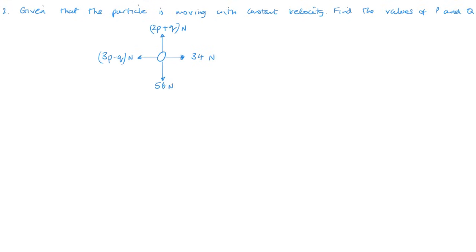This particle is moving with a constant velocity which means that the forces are balanced. So horizontally that is 3p minus q equals 34. Can't do anything with that just yet. Look vertically and we get 2p plus q equals 56. So I've got two equations and two unknowns, I can solve them simultaneously.